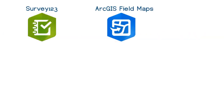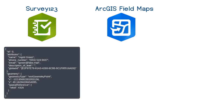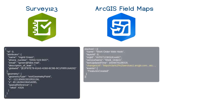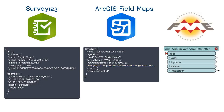Webhooks can be created in both ESRI's Survey123 and ArcGIS Fieldmaps to send data to FME server. The webhooks are slightly different for each product. Survey123 sends the feature attributes in JSON. ArcGIS Fieldmaps uses a feature service webhook that returns a changes URL, which must then be called to get the feature attributes. To simplify this, we've created the ArcGIS Online Data Webhook Getter transformer, which takes the whole webhook message and returns all the added, updated, or deleted features since the URL was last called.